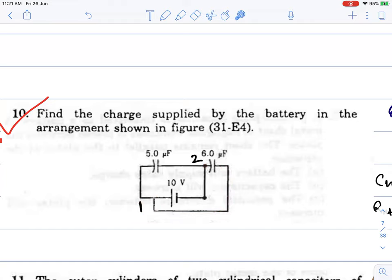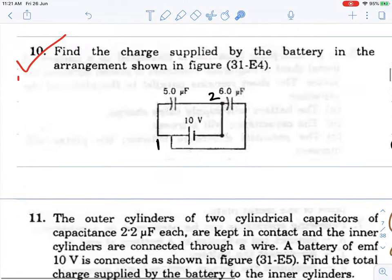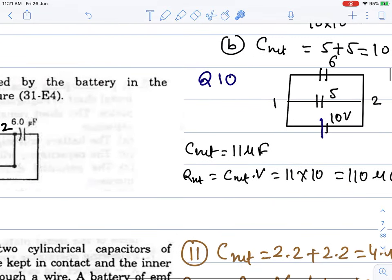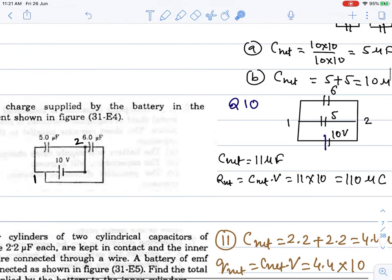This is point 1 and this is point 2. Both capacitors are connected in parallel between these points. So the net capacitance is 6 plus 5 equals 11 µF. Then Q_net = C_net × V. This gives the total charge drawn from the battery.